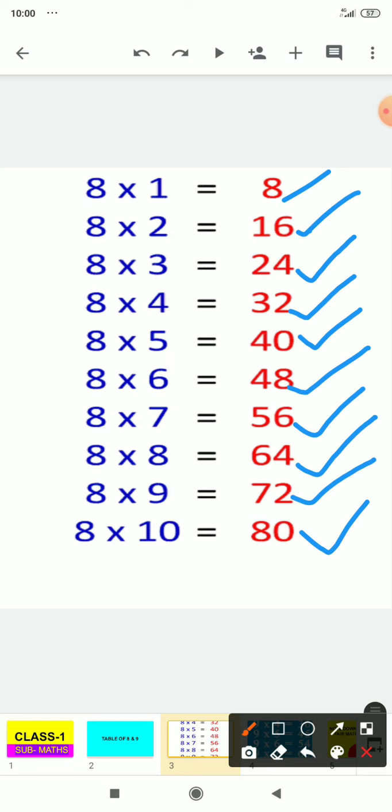8 times 4 is 32, 8 times 5 is 40, 8 times 6 is 48, 8 times 7 is 56, 8 times 8 is 64, 8 times 9 is 72, 8 times 10 is 80.